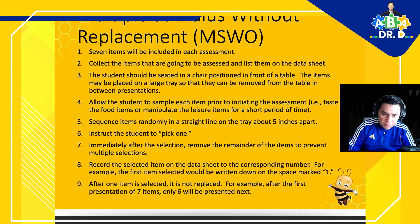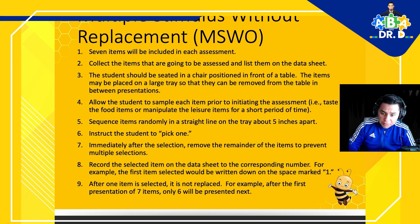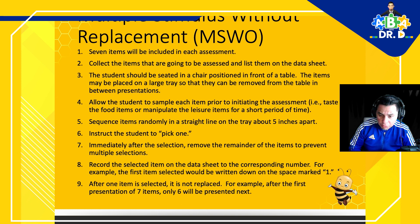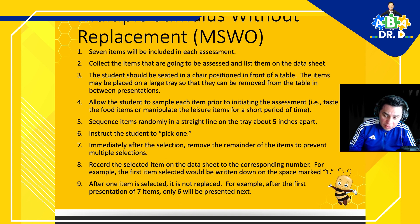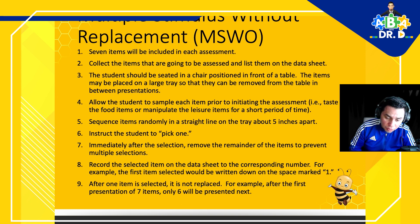Allow the student to sample each item prior to initiating the assessment — for example, taste food items or manipulate leisure items for a short period of time. Arrange items randomly in a straight line on the tray about five inches apart and instruct the student to pick one. Immediately after the selection, remove the remaining items to prevent multiple selections. Record the selected item on the data sheet by its corresponding number — the first item selected is written on the space marked one. After one item is selected, it is not replaced, so after the first presentation of seven items, only six will be presented in the next trial.